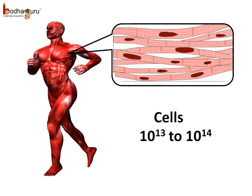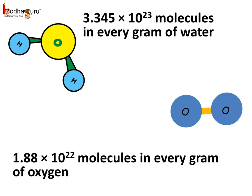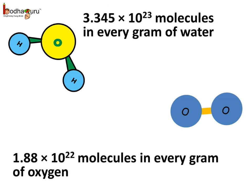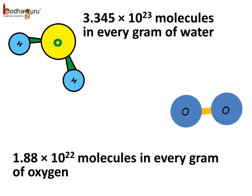Also, do you know how many cells are there in our body? Our body has approximately 10 to the power 13 to 10 to the power 14 cells. That's a huge number of cells. Do you know how many molecules are there in 1 gram of water? Well, there are 3.345 multiplied by 10 to the power 23 molecules. And that's a great number.